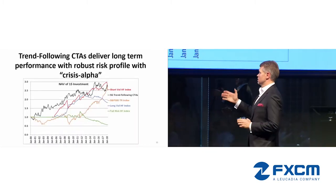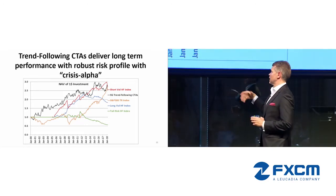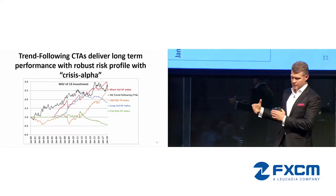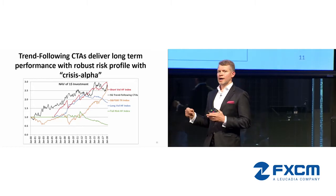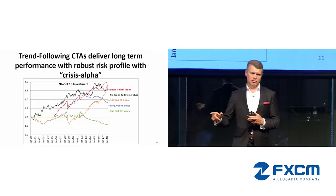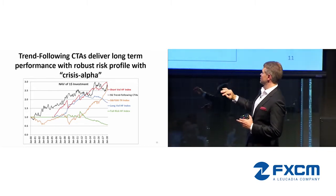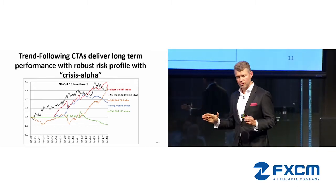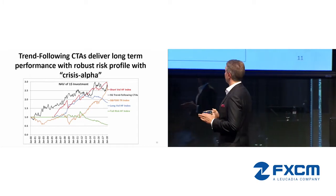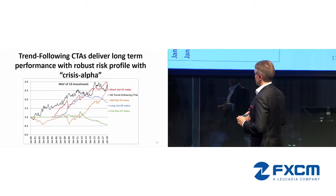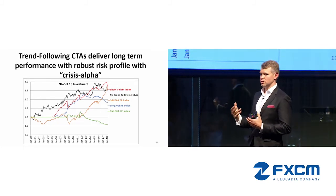Looking at performance: tail risk hedge funds are on the lowest spectrum because they deliver at the expense of underperforming in good markets. Short volatility strategies perform well most of the time, but the drawdowns are bad. Trend following tends to perform well under specific conditions — and those conditions will be the next part of the presentation.